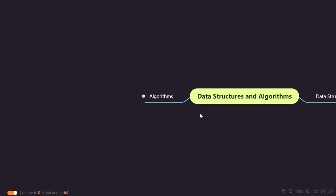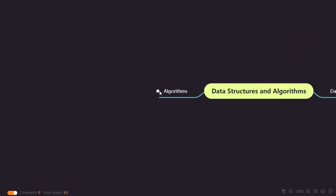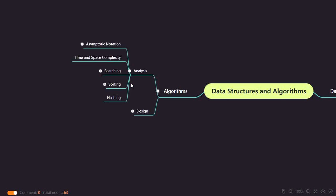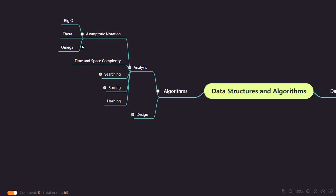When we talk about algorithms, I have divided them into two topics: analysis of the algorithm and design of the algorithm, where we will be creating our own designs. For analysis, you should know asymptotic notation — which contains Big O notation, Theta notation, and Omega notation — then time and space complexity of an algorithm, recurrence relations, the Master Theorem, recursion tree method, and how to analyze loops.